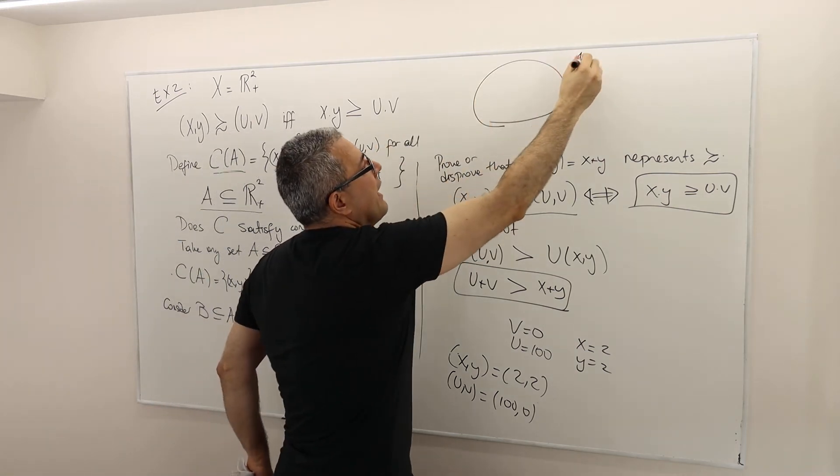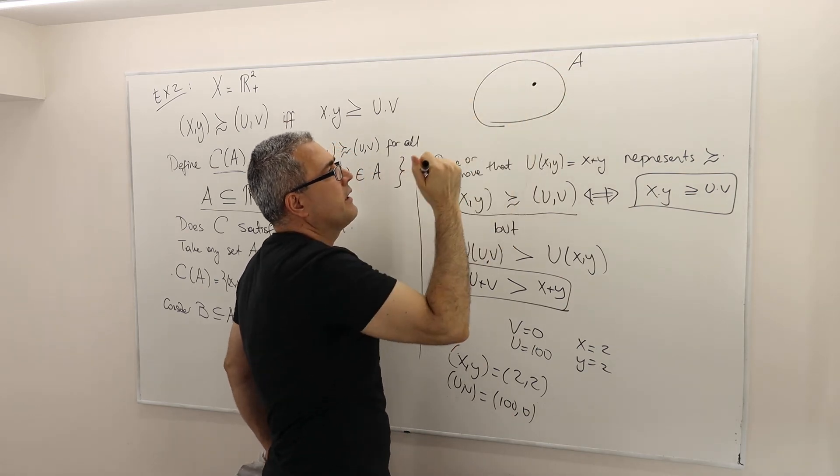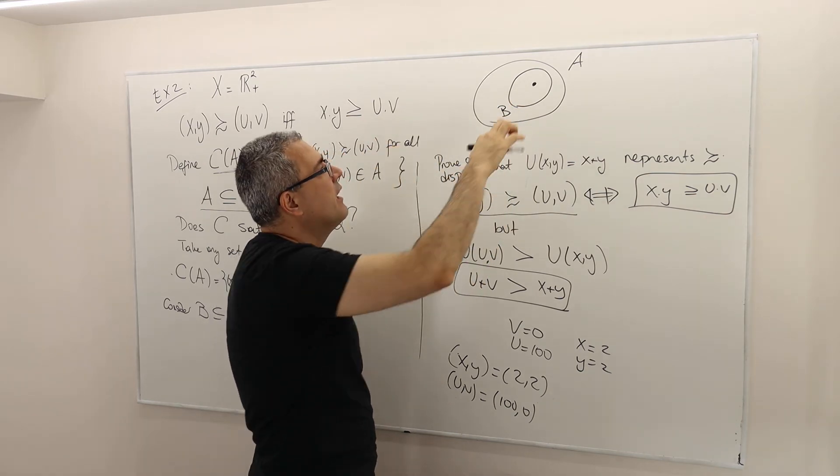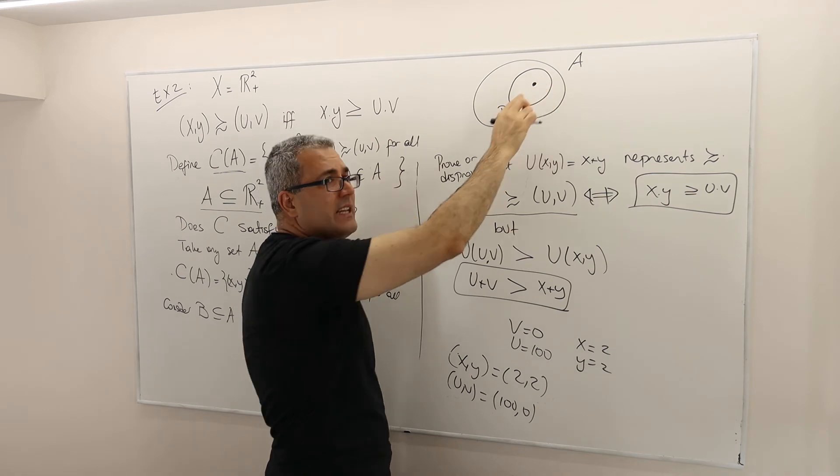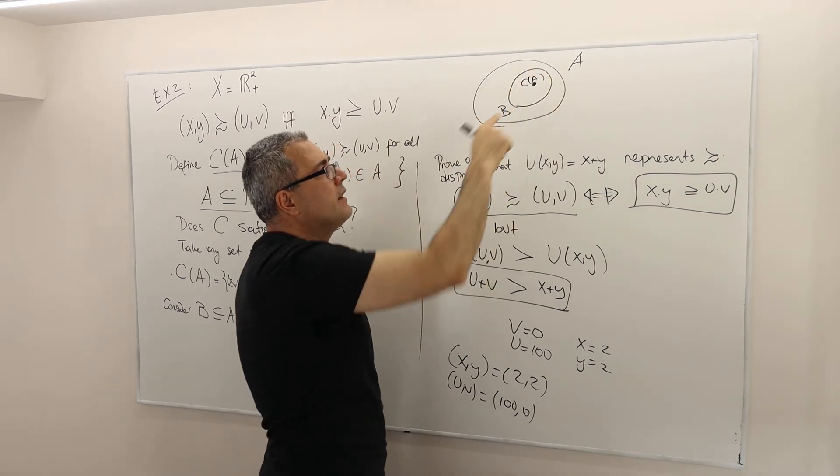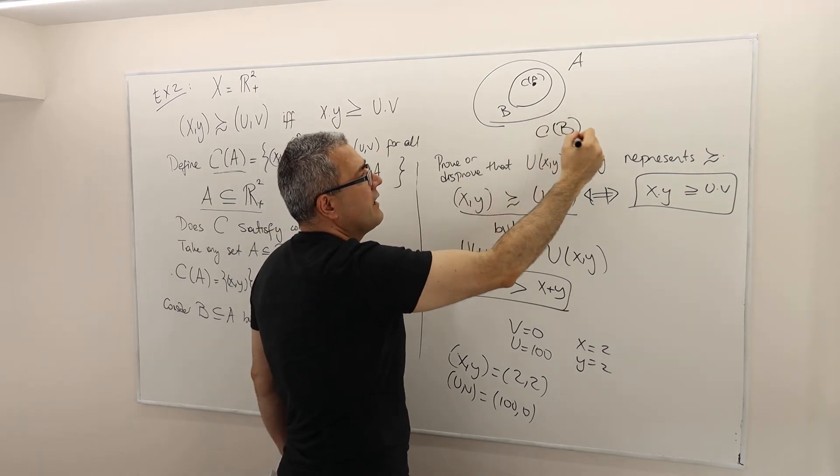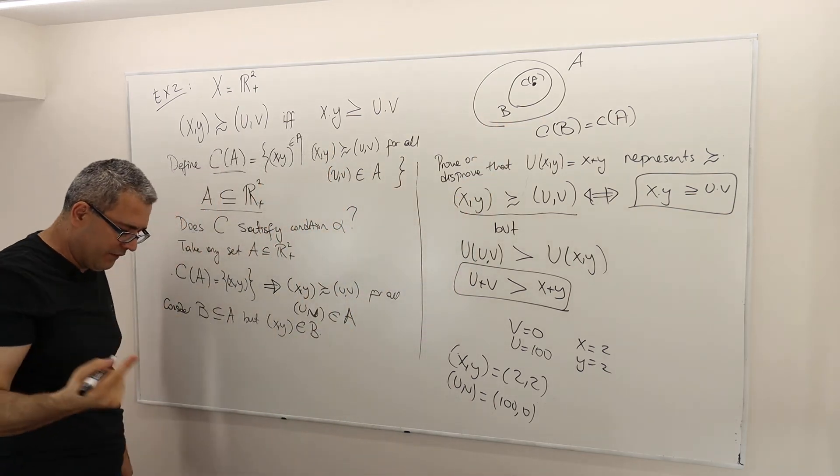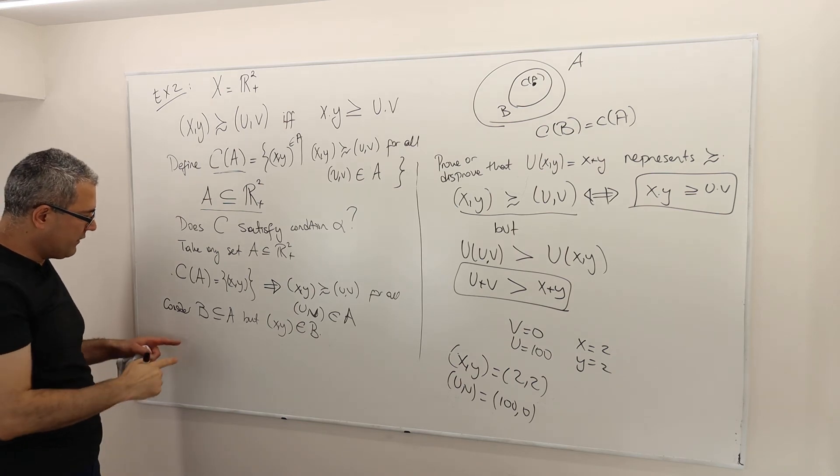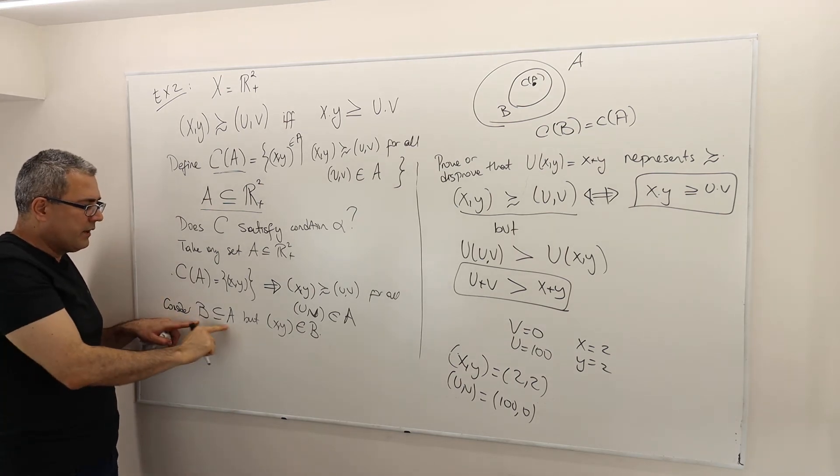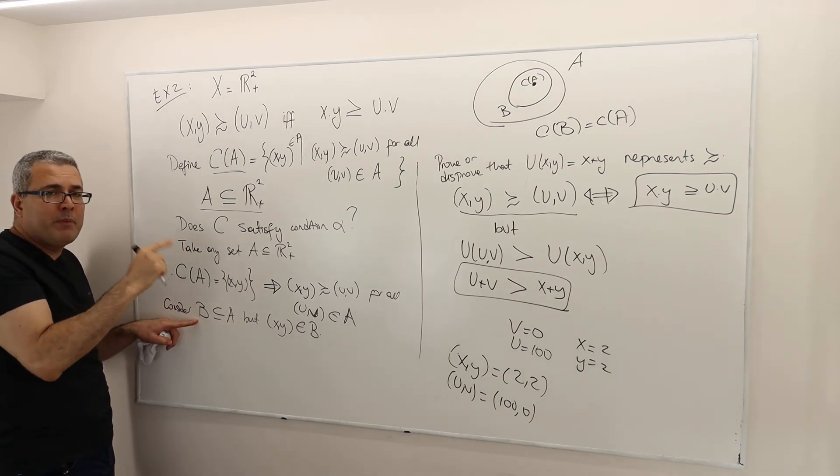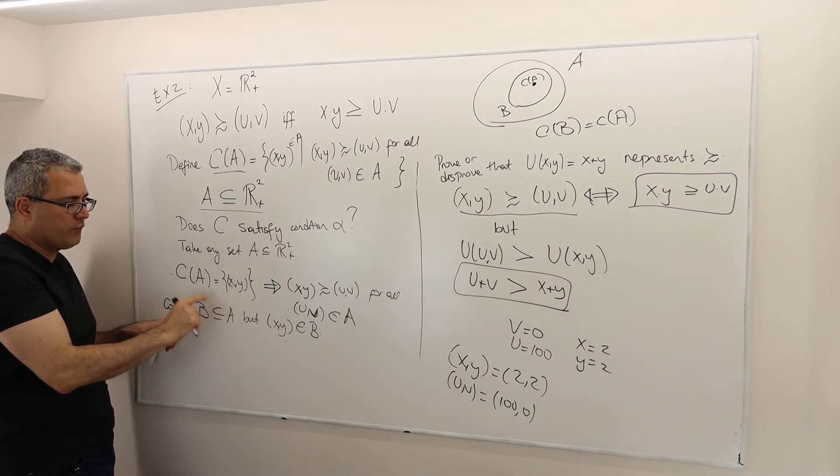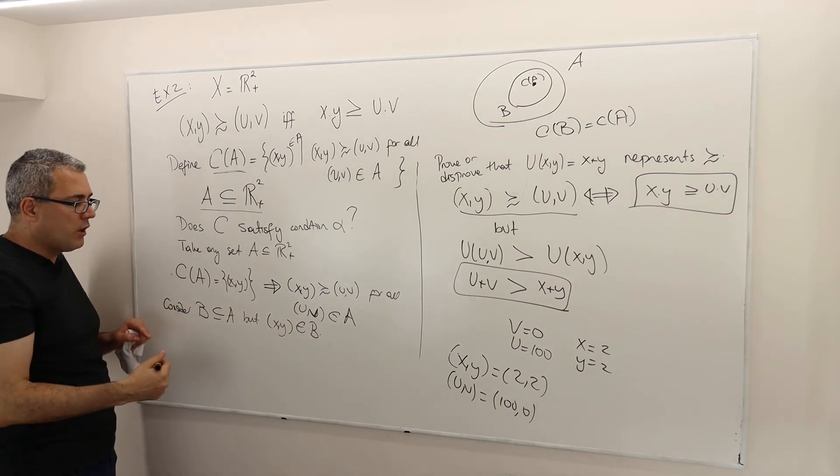Remember the definition of condition alpha? If you choose this guy from this large set, and if I'd ask you to choose again in a smaller set B, but this guy is still in this set, well, then your choice in set B must be exactly your choice in set A, right? That was the definition, and that is the definition of condition alpha. So what I'm doing is, I am considering just one. Again, randomly, I don't know what B exactly is. All I want B is to be a subset of A, and this XY guy, because it is the choice from the set A, is an element of B. So what do I know?